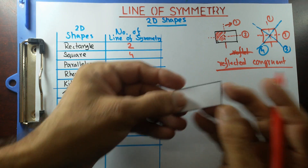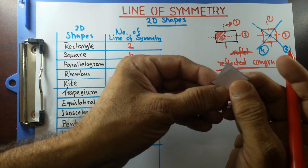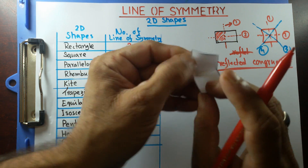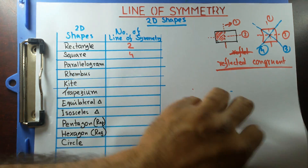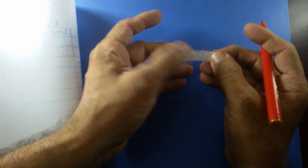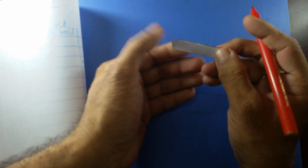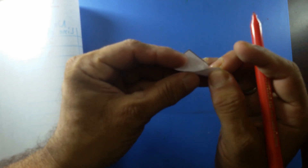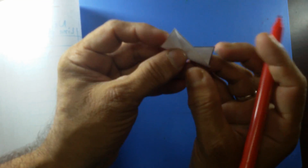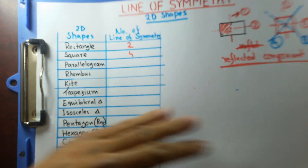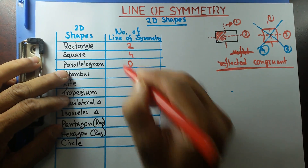Now let's try with the parallelogram. If I fold it through the middle vertically, I can see that it does not coincide. Similarly, when I fold it horizontally — see, it's not coincide again. So vertically and horizontally, no. What about diagonally? Like the rectangle, none of the diagonals work either. So we can conclude that this parallelogram does not have any line of symmetry.